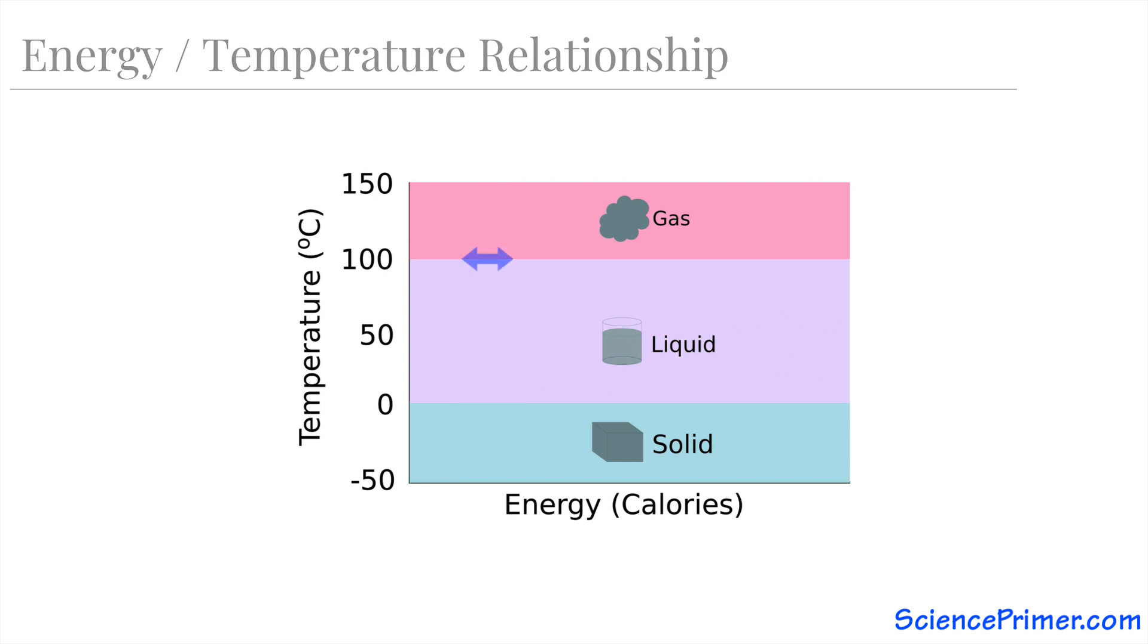At 100 degrees, water undergoes another phase change from liquid to vapor. And above 100, it is a vapor or a gas. If we start with water at room temperature and have it absorb heat, we know that its temperature will increase. The more heat it absorbs, the higher its temperature will be.